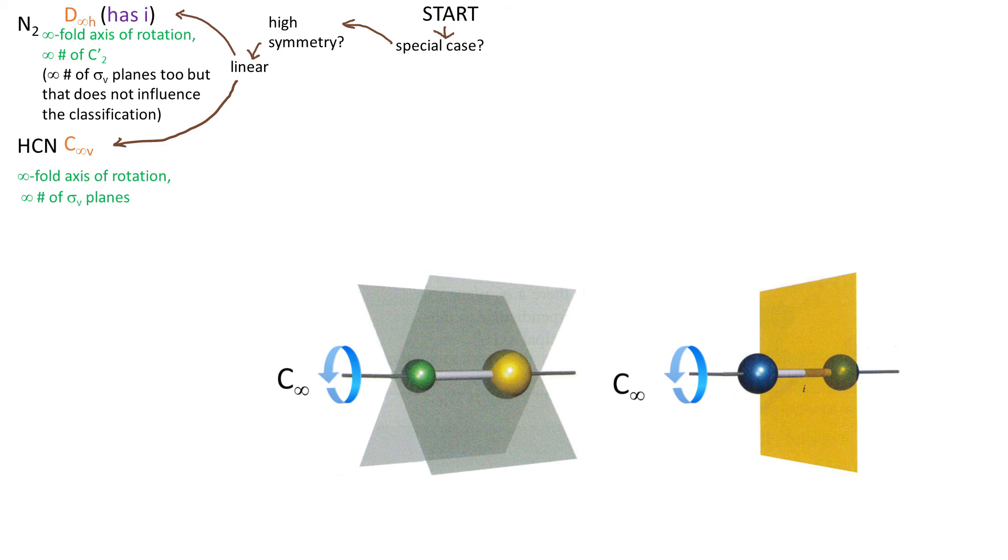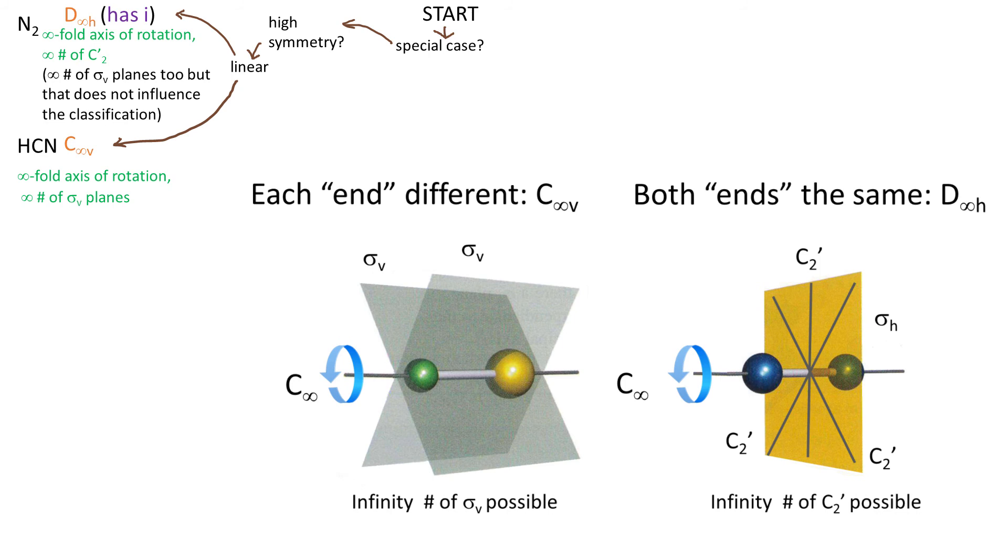The idea is that because the molecule is linear, you can rotate by any angle. So for C infinity V, that results in infinity sigma vertical, but there is no sigma H. For D infinity H, that results in infinity C2 axes perpendicular to the main axis, and there is sigma H.